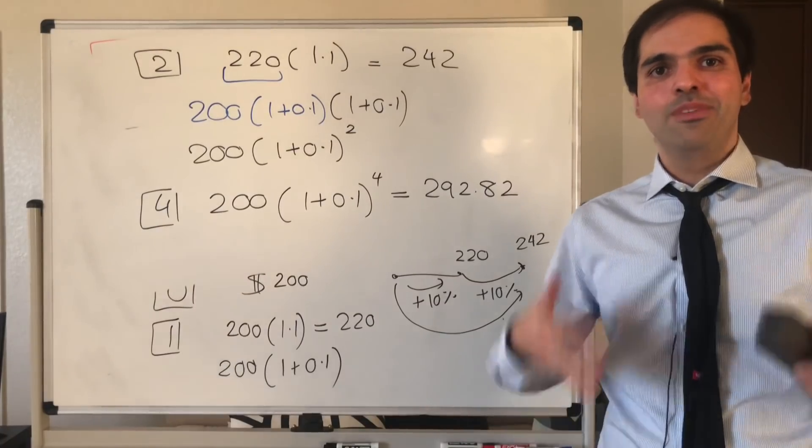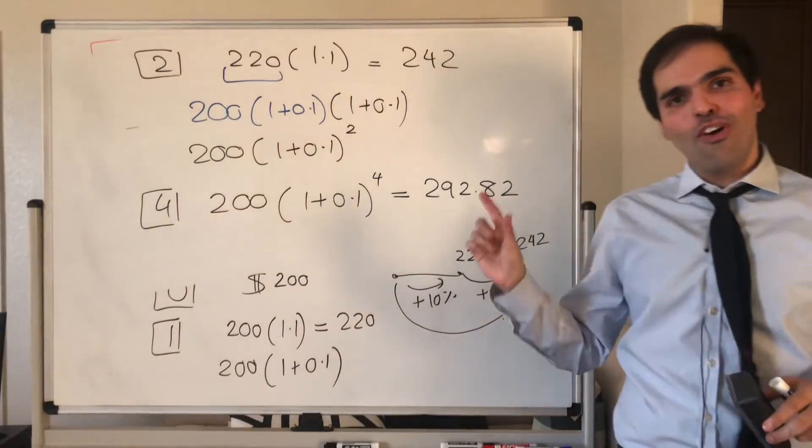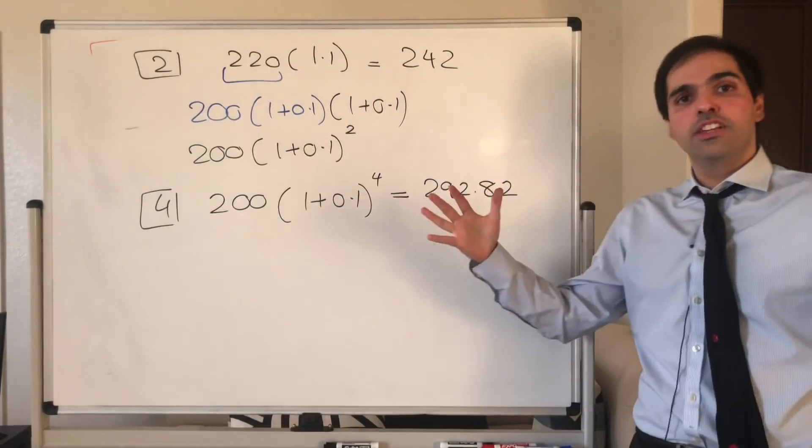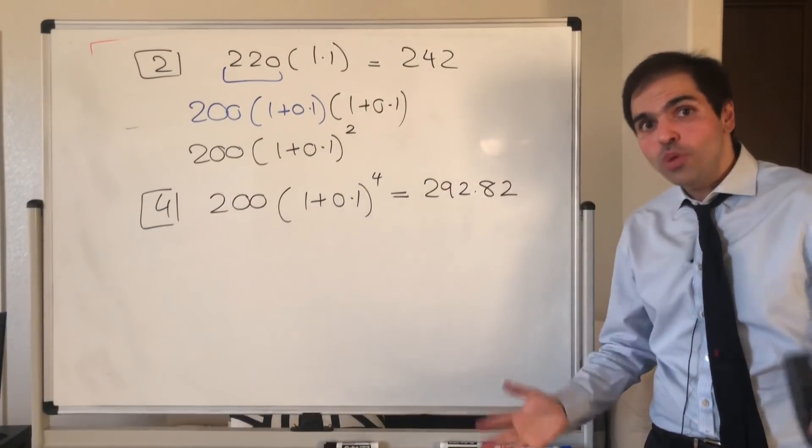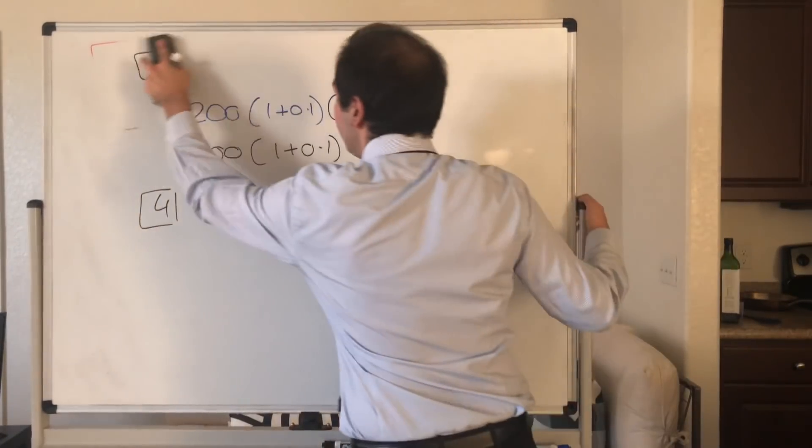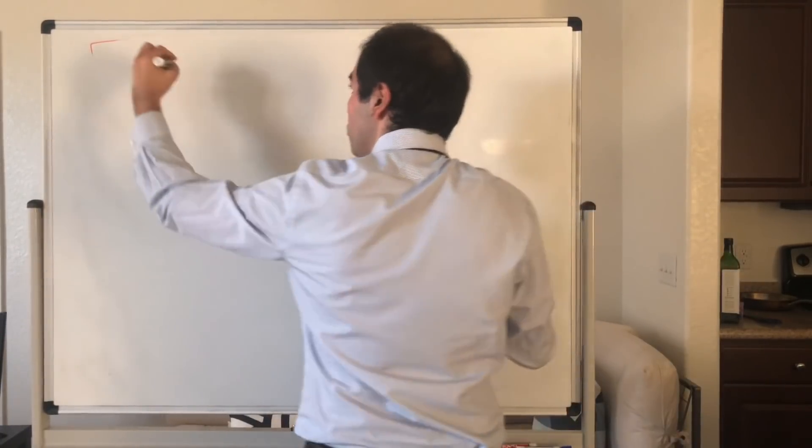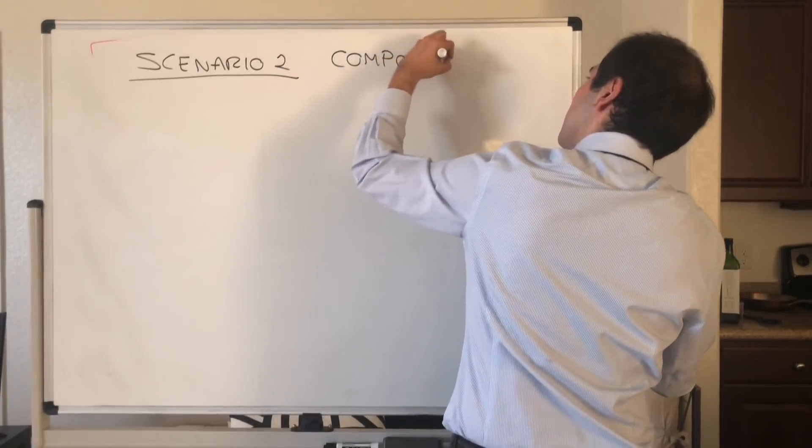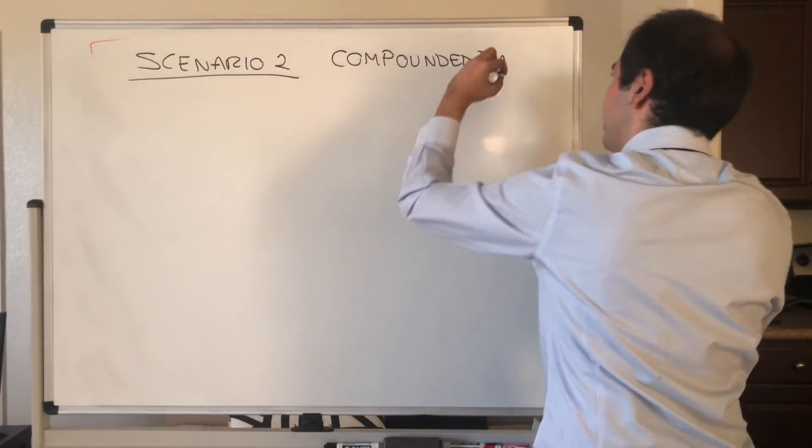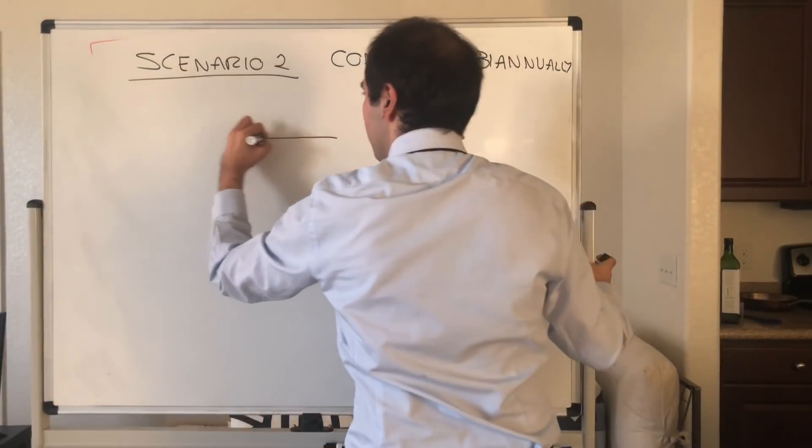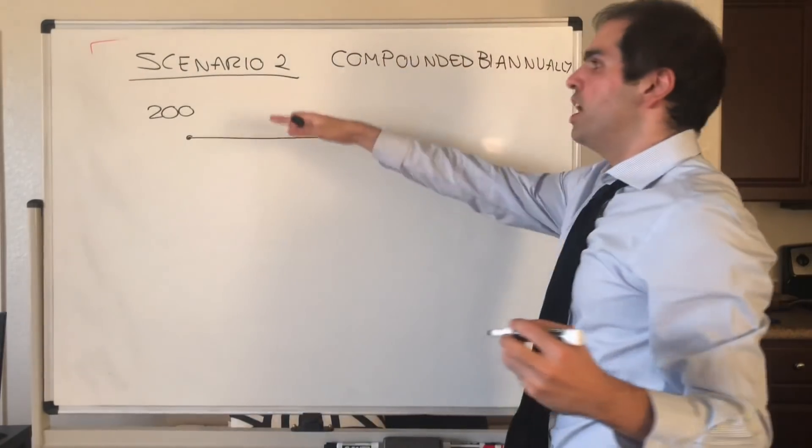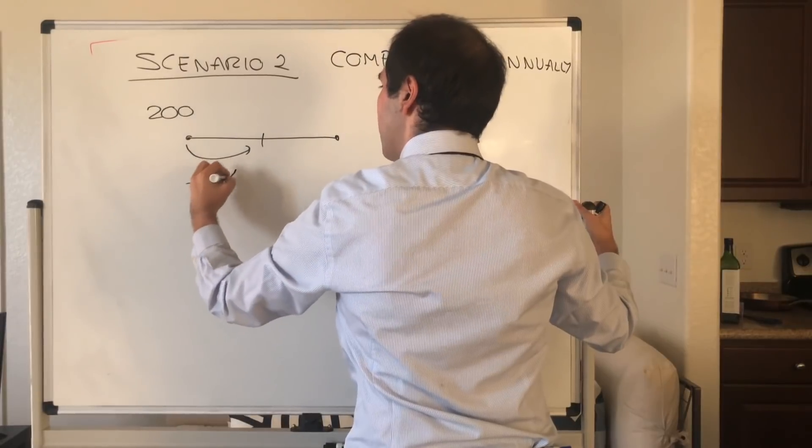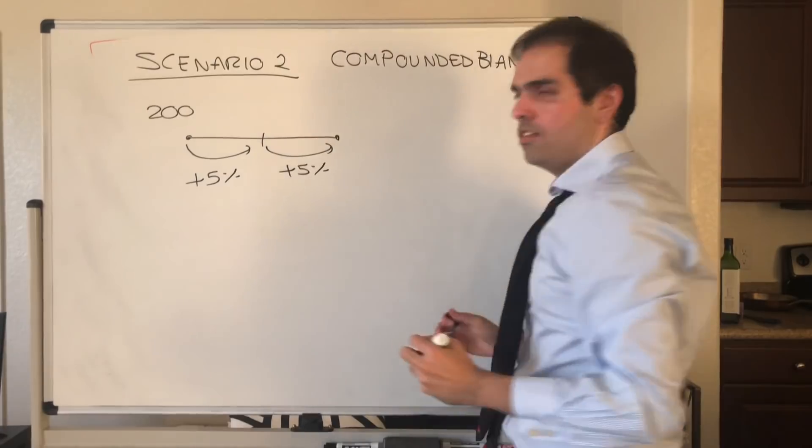Now, that was a simple scheme where we just give you interest once per year. What about the following thing? And which is what banks usually do. What if, instead of giving you 10% interest once per year, I give you 5% interest twice per year. Is that better or not? We'll see. So scenario two: compounded bi-annually, which I mean twice per year. So as I said, before you had 200 and we added 10% after the first year. Here we just split it up into two. We have 200, I give you 5%, and then I give you 5% again. Is that better or not? Let's see.